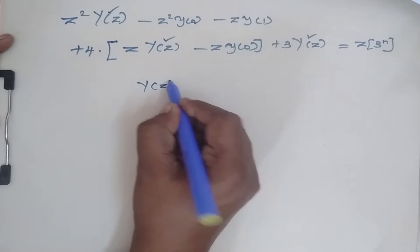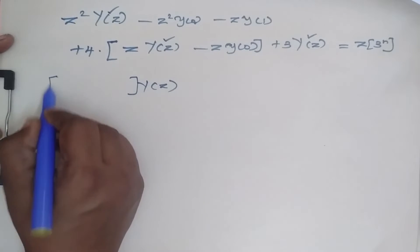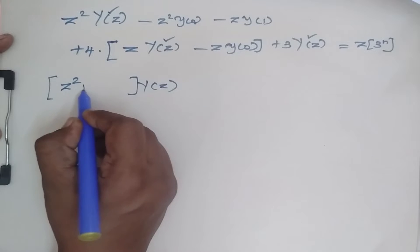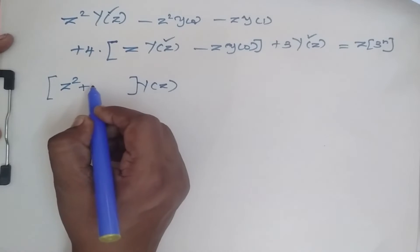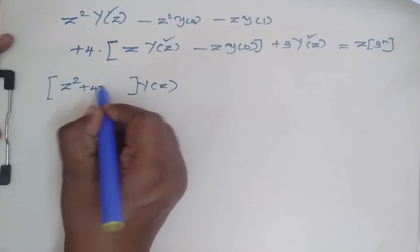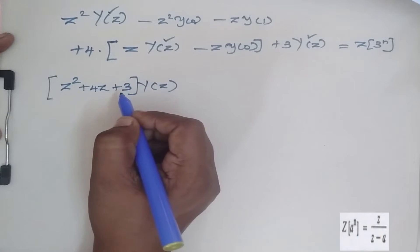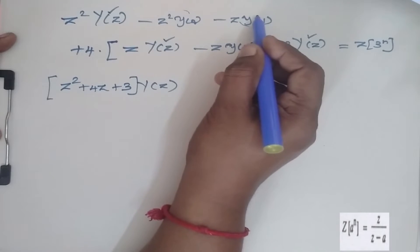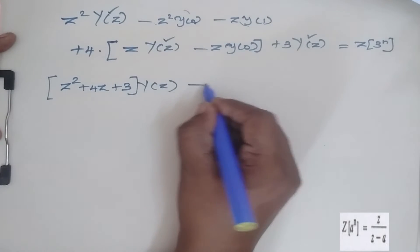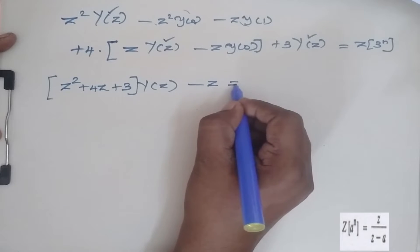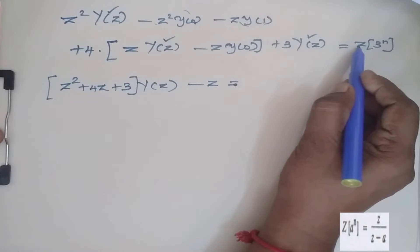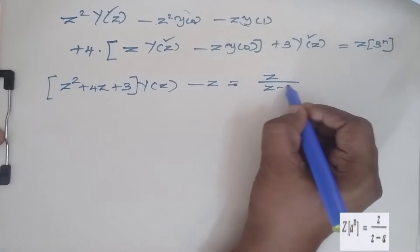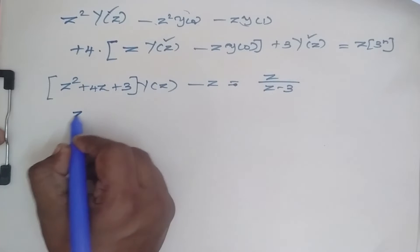When I combine all Y(z) terms together I get (z² + 4z + 3)·Y(z). Since y(0) = 0 and y(1) = 1, the y(0) terms become 0, and I have minus z remaining. Now applying the formula for Z{3^n}, which is z/(z−3). Now factorize the left side.